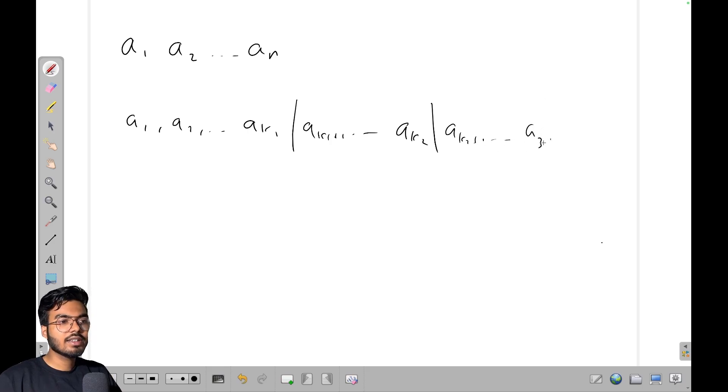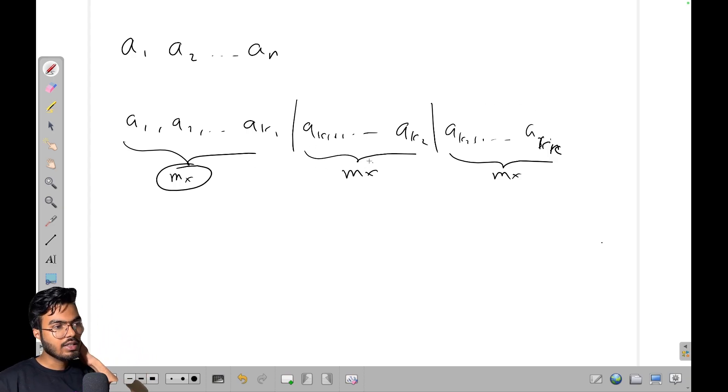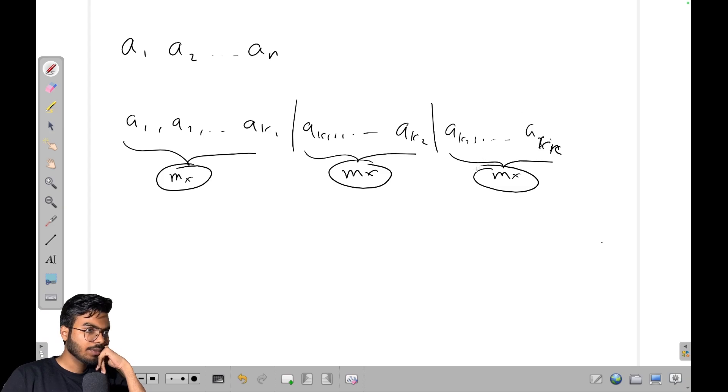Suppose we have k subsegments, and each of these has max value of mx, mx, and mx. I think it is easy if we already know this value of mx, then we can easily find it.